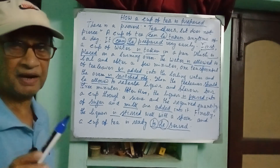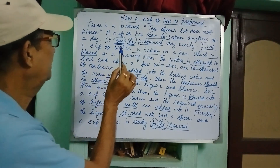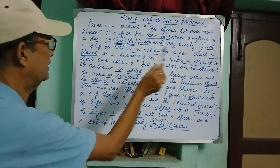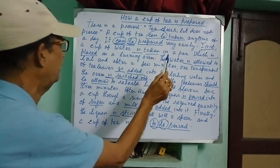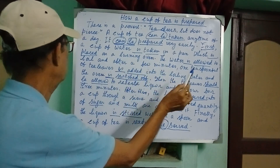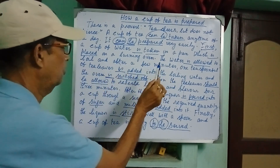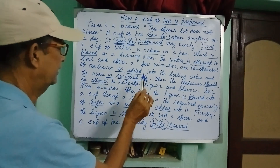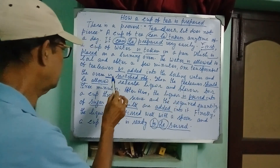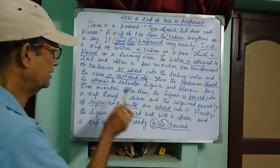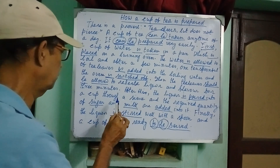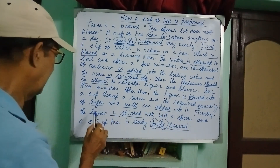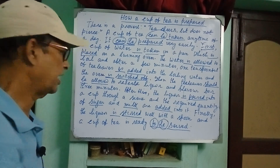Let us read the short paragraph again. There is a proverb: tea tears but does not pierce. A cup of tea can be taken any time of a day. It can be prepared very easily. First, a cup of water is taken in a pan which is placed on a burning oven. The water is allowed to boil. And after a few minutes, one teaspoonful of tea leaves is added into the boiling water, and the oven is switched off. Then, the tea leaves should be allowed to release liquor and flavor for three minutes. After this, the liquor is poured into a cup through a sieve, and the required quantity of sugar and milk are added into it. Finally, the liquor is stirred well with a spoon and a cup of tea is ready to be served.